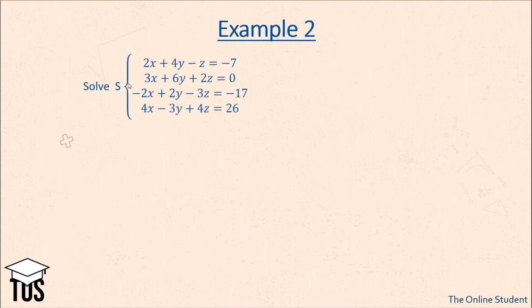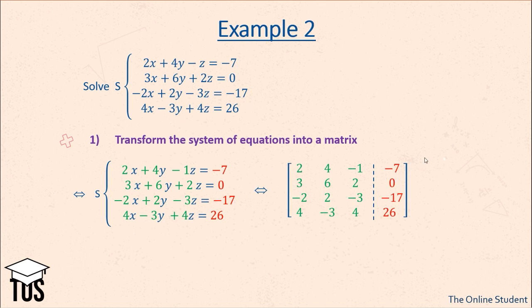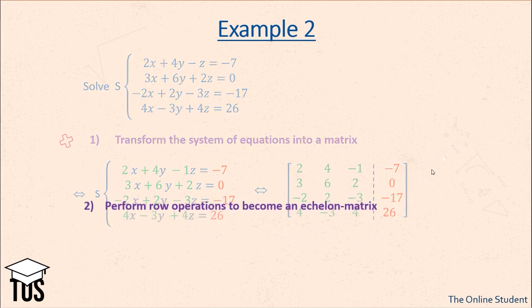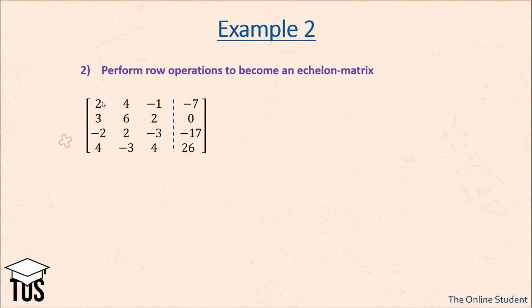Let's look at our second example. We need to solve this system of equations to find x, y, and z. The first thing to do is transform the system into a matrix by taking all the coefficients and placing them into the augmented matrix. The second step is to perform row operations to become the echelon matrix. We know that the first element, 2, will be our first leading element, so we try to get zeros beneath it.